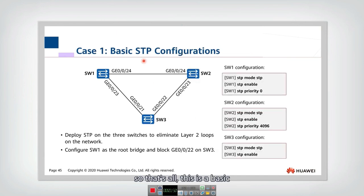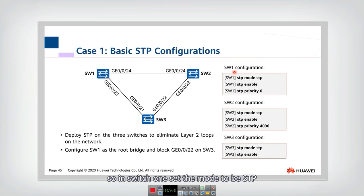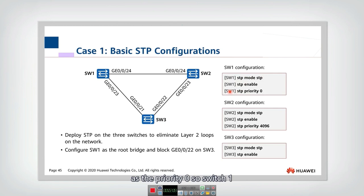This is a basic STP configuration example. In this example, if we want these three switches to run STP, we can do the following configuration. In switch one, set the mode to STP, enable STP, and set the switch priority to zero. So switch one will be the root.